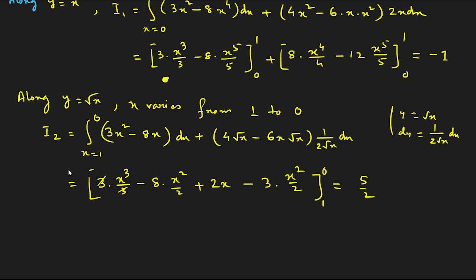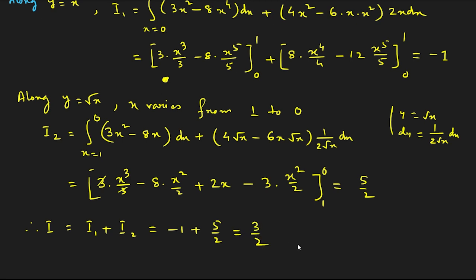After putting the limits, we get I₂ = 5/2. Therefore the total integral I = I₁ + I₂ = −1 + 5/2 = 3/2. This is the left-hand side of Green's theorem.